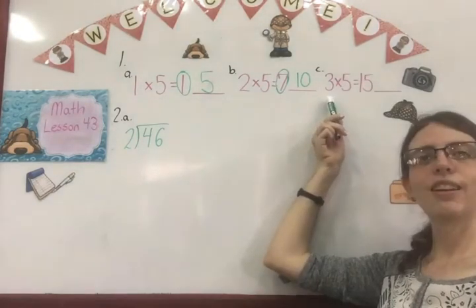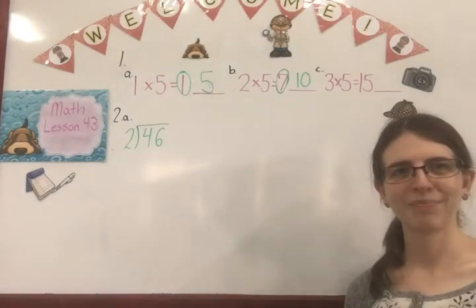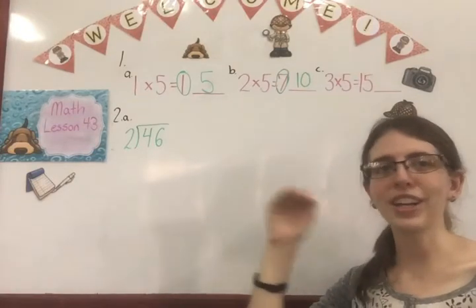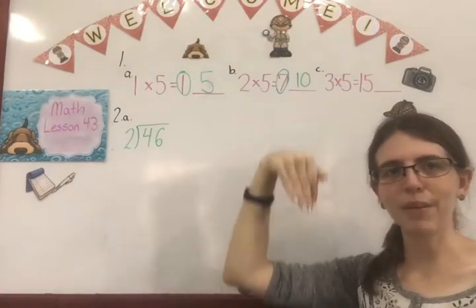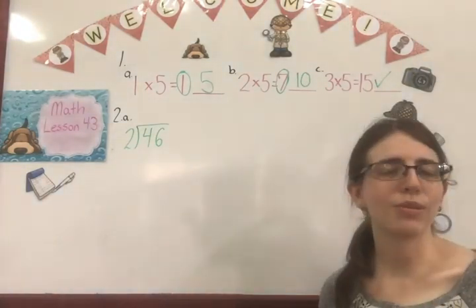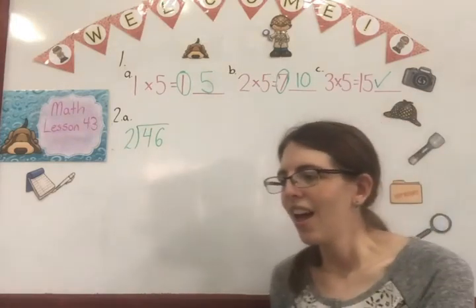And then look at letter C. 3 times 5 equals 15. Is that correct? Yeah, that one's good. So we're not going to do anything to that. We're going to leave that one alone. If you want to, you can put a check mark in the blank so that you do something to know that it's good and you didn't just forget to do your problem.